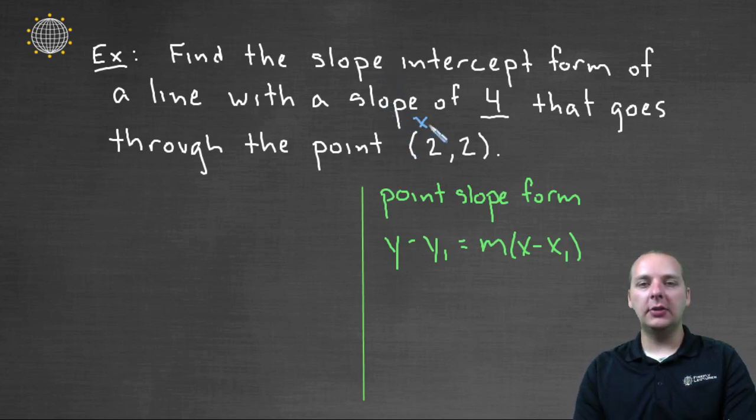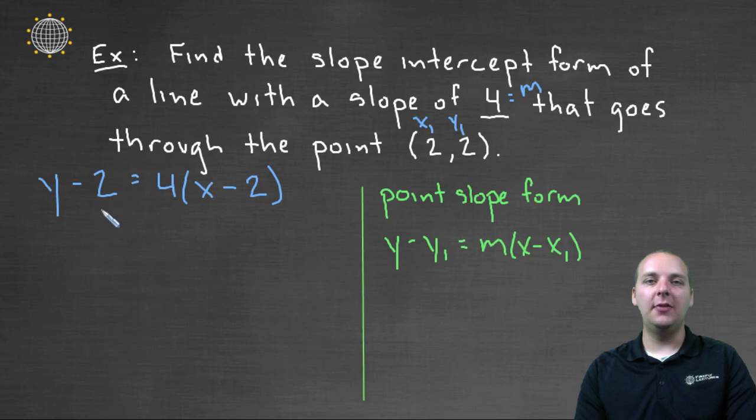So here I noticed that x₁ is 2, and y₁ is 2, and the 4 is my m, that's my slope. So I'd have y minus y₁, which is 2, equals m, which is 4, times the quantity (x minus x₁), which is also 2. So the x and the y stay variables, and the x₁, y₁ are 2 and 2, and the slope is 4. So this in some respects is my answer.